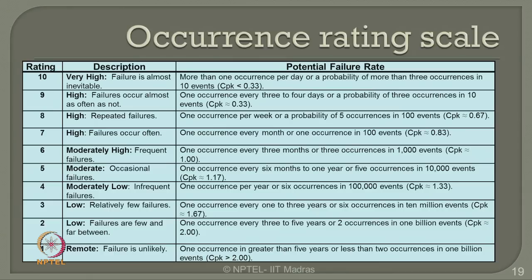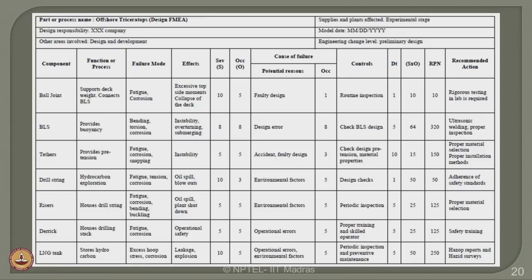Once we understand how to quantify these numbers on a scale of 1 to 10, the maximum score of RPN can be 1000. The RPN — risk priority number — is a product of occurrence, severity and detectability. Therefore on a 10-point scale you can have a maximum value of 1000 for an RPN.